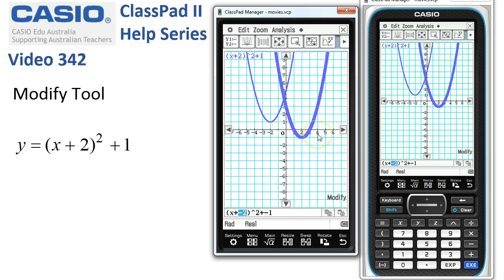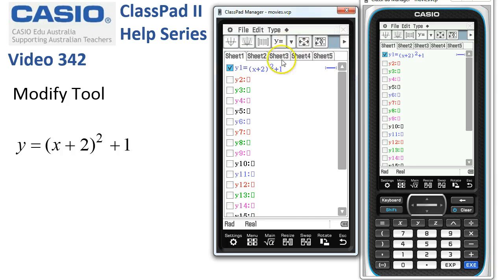So basically that's what modify is all about. It gives you a way of taking a function and exploring the effects of all the parameters within it. When we want to stop doing this activity, we just tap on the cross to close the graph window and that's that.